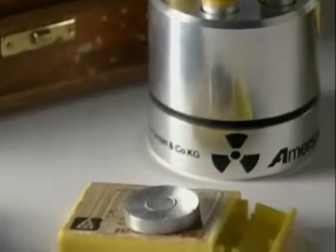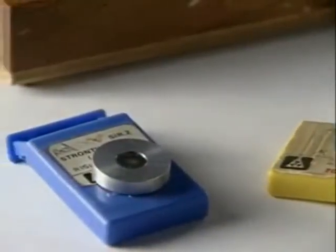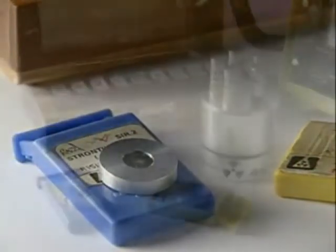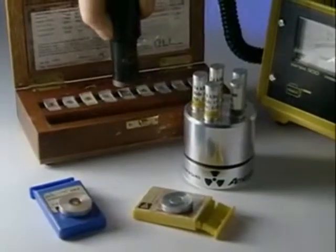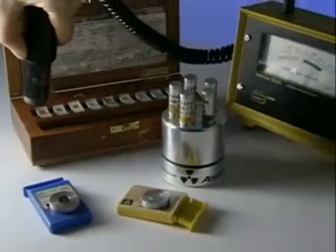Although nothing appears to be happening, all these substances are emitting nuclear radiation. It's invisible, but an easy way of detecting it is to use a Geiger-Müller tube attached to a counter.